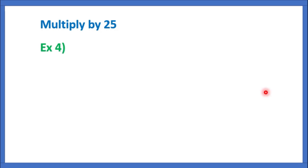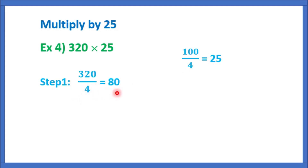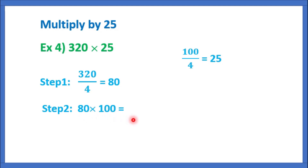Multiply by 25. Example 4: 320 into 25. Here, 25 is nothing but 100 by 4, which is equal to 25. So first we should divide by 4. That is equal to 320 by 4 is equal to 80. Now, we should multiply with 100. That is equal to 80 into 100. We should put 2 zeros after 80. That is equal to 8,000. This is our final answer. So, 320 into 25 is equal to 8,000.